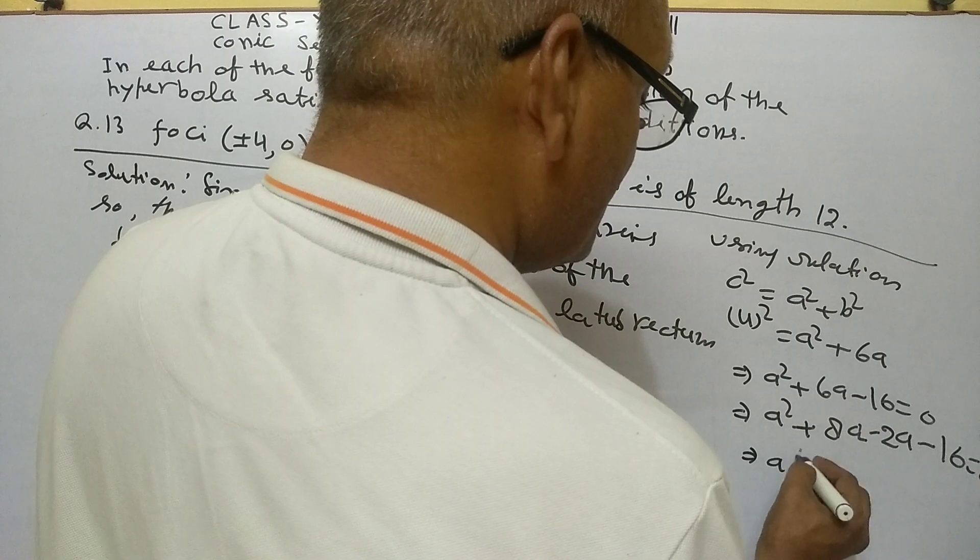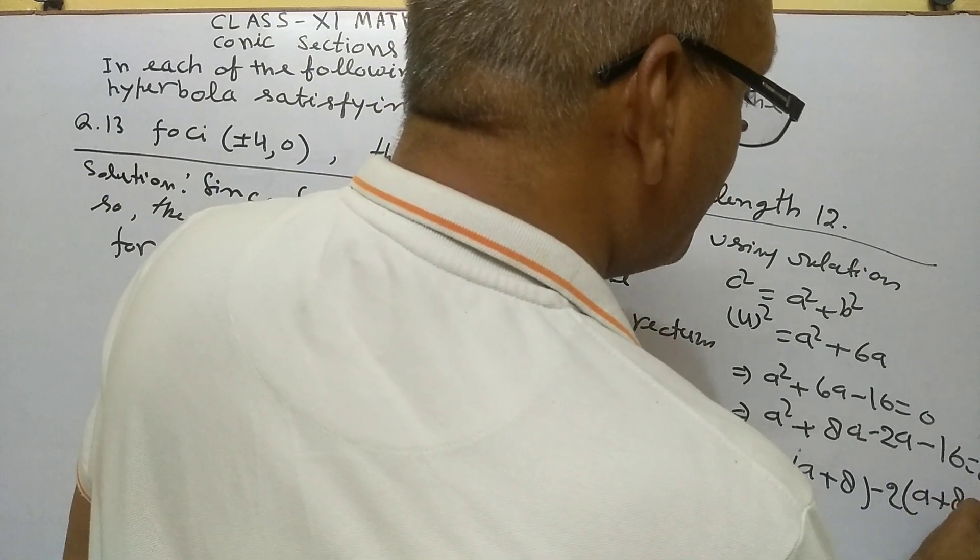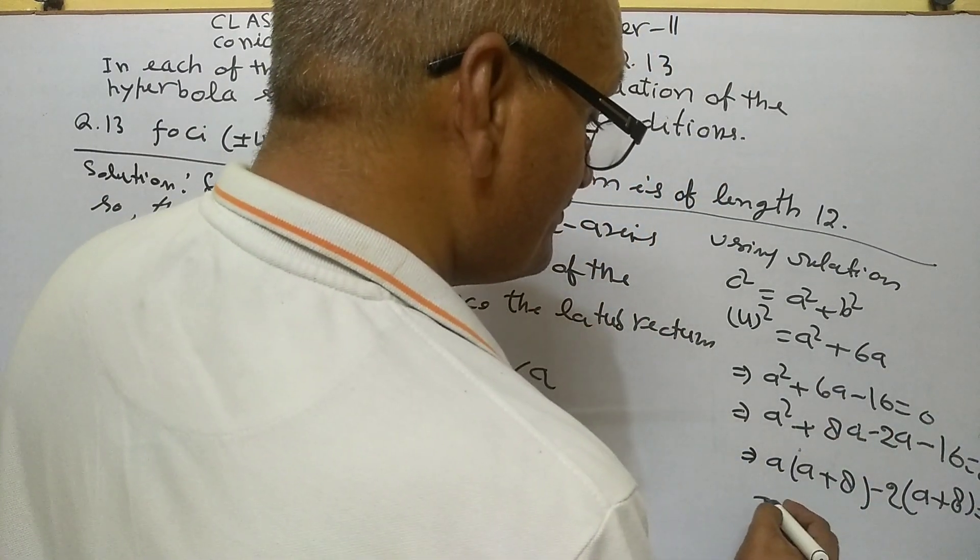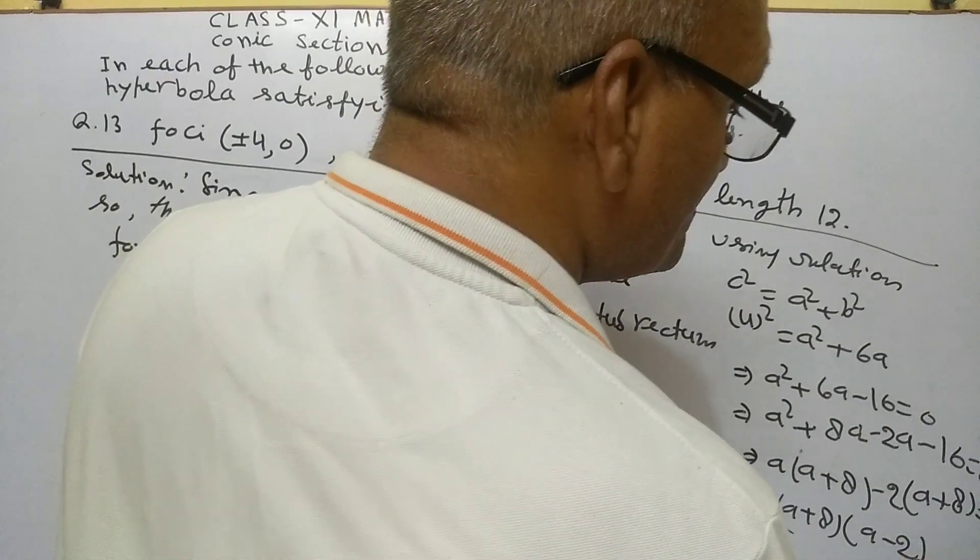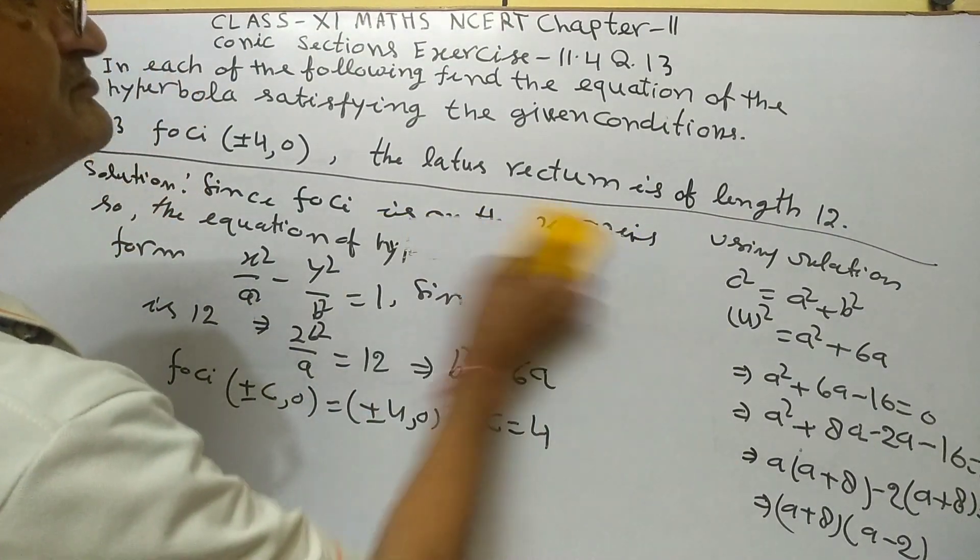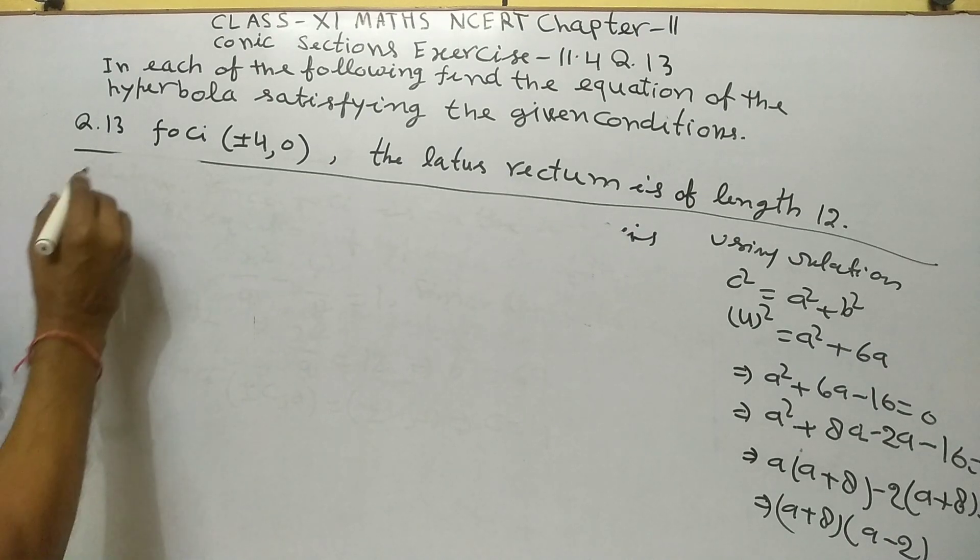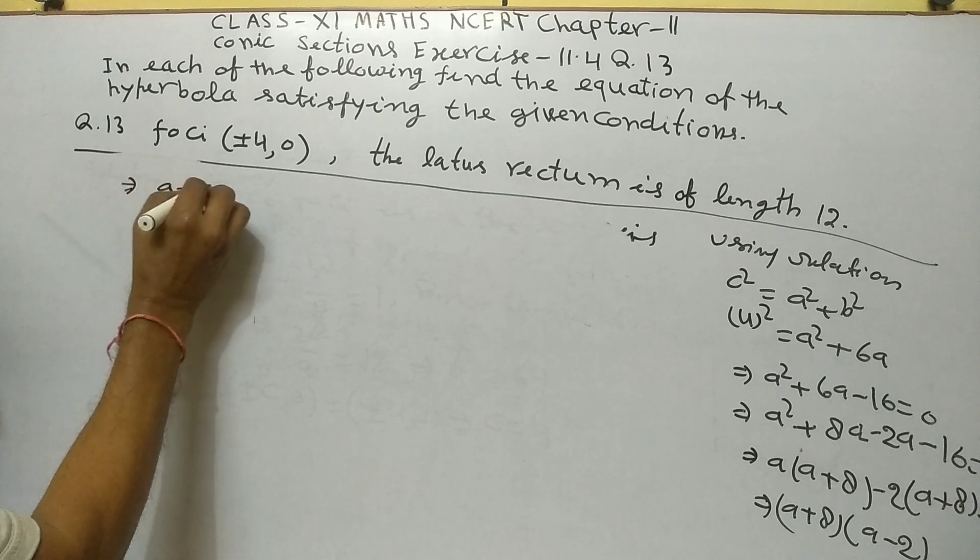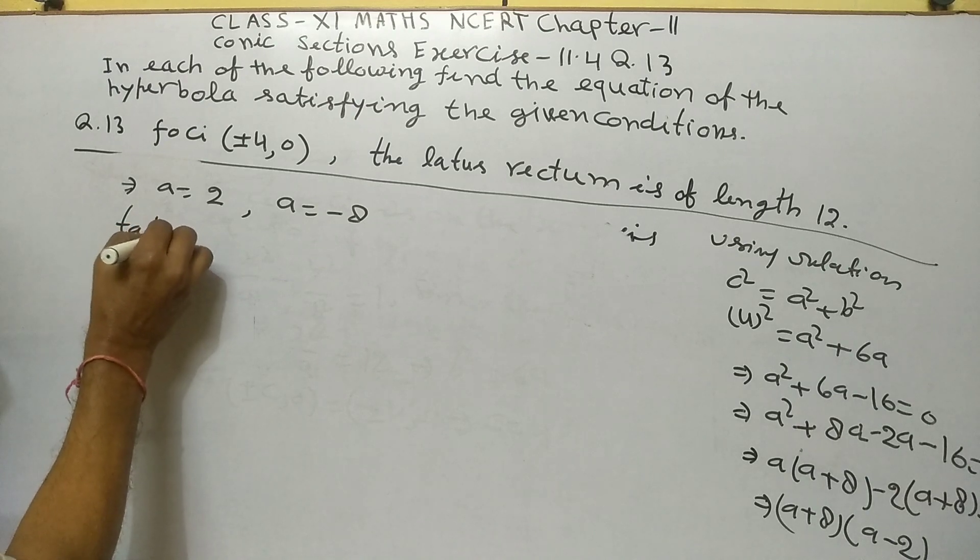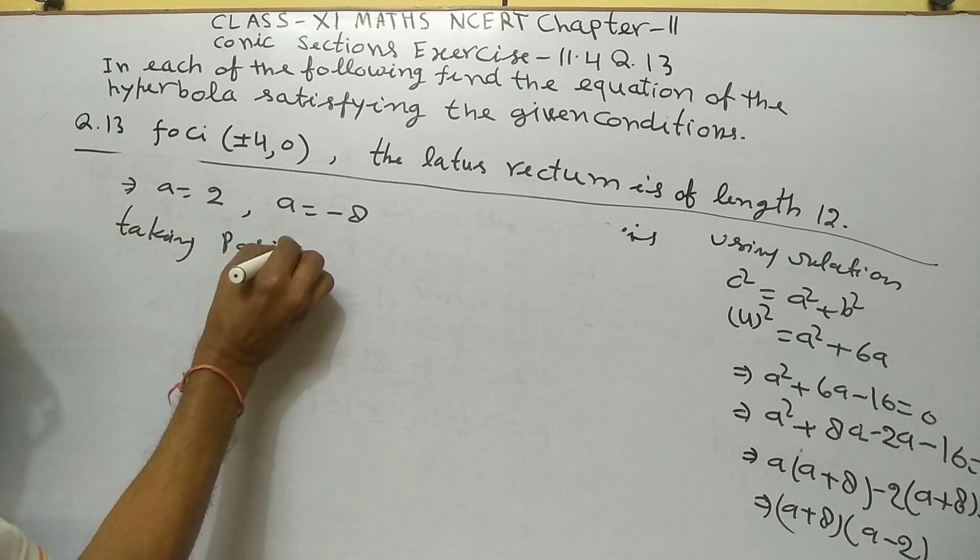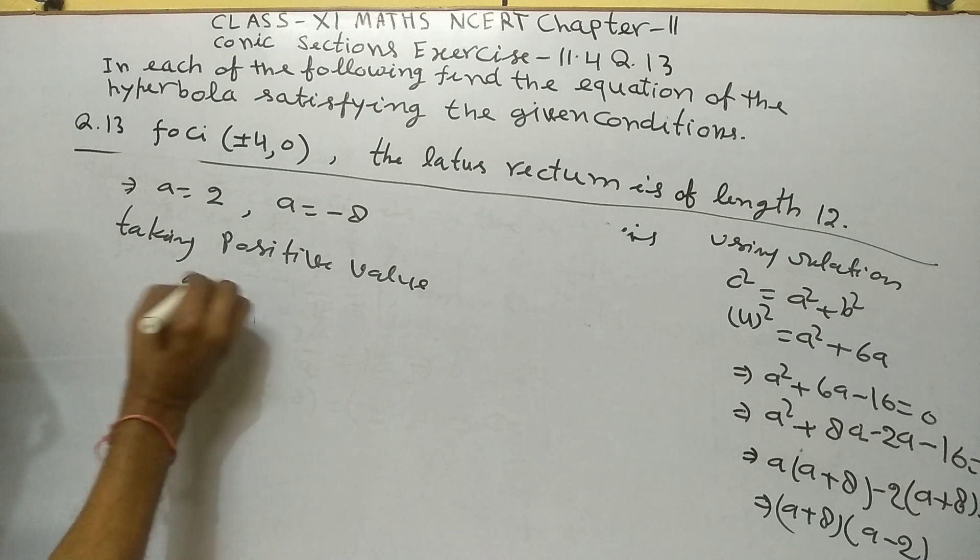Implies a² + 8a - 2a - 16 = 0. Implies a(a + 8) - 2(a + 8) = 0. Implies (a + 8)(a - 2) = 0. Implies a = 2 or a = -8.